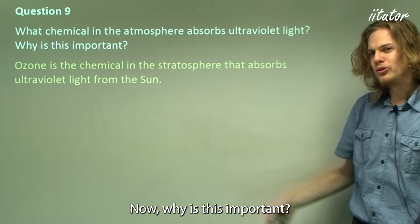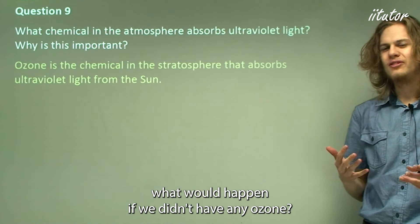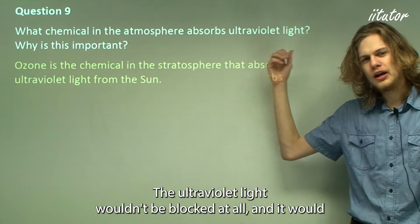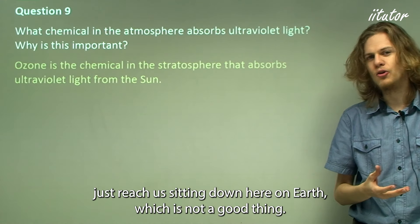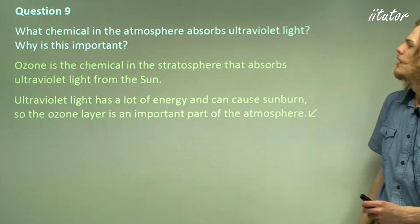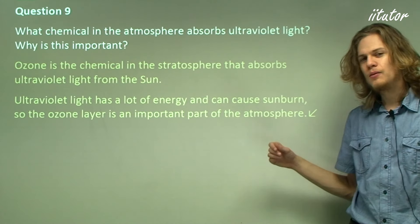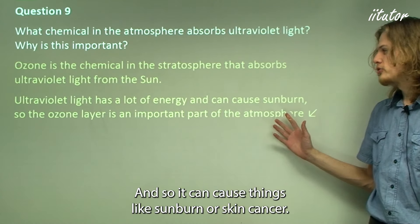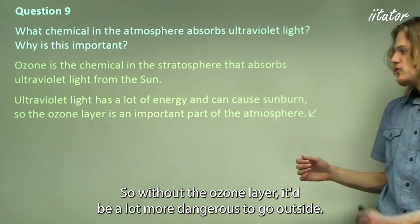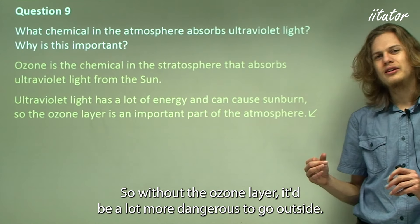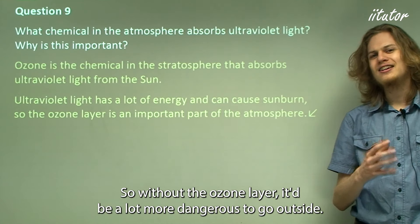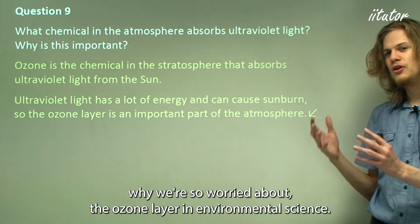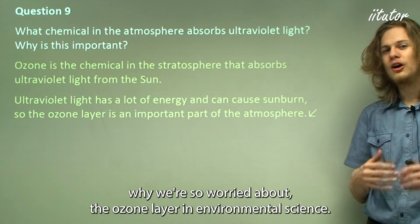Why is this important? Without the ozone layer, ultraviolet light wouldn't be blocked at all and would reach us on Earth, which is not a good thing. Ultraviolet light has a lot of energy compared to visible light and can cause things like sunburn or skin cancer. So without the ozone layer, it would be far more dangerous to go outside, which is of course why we're so worried about the ozone layer in environmental science.